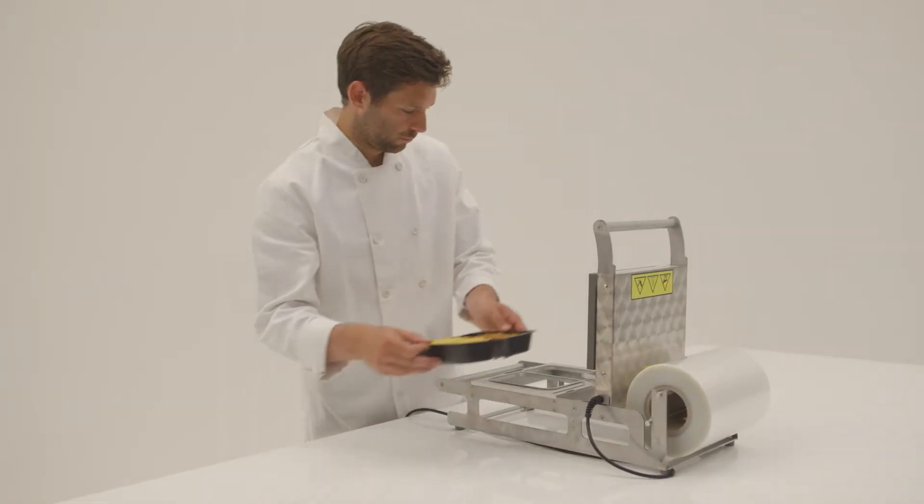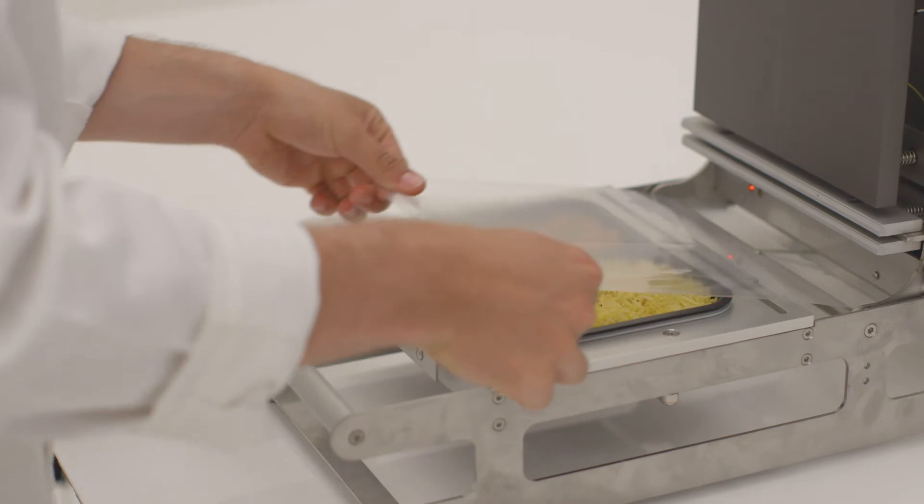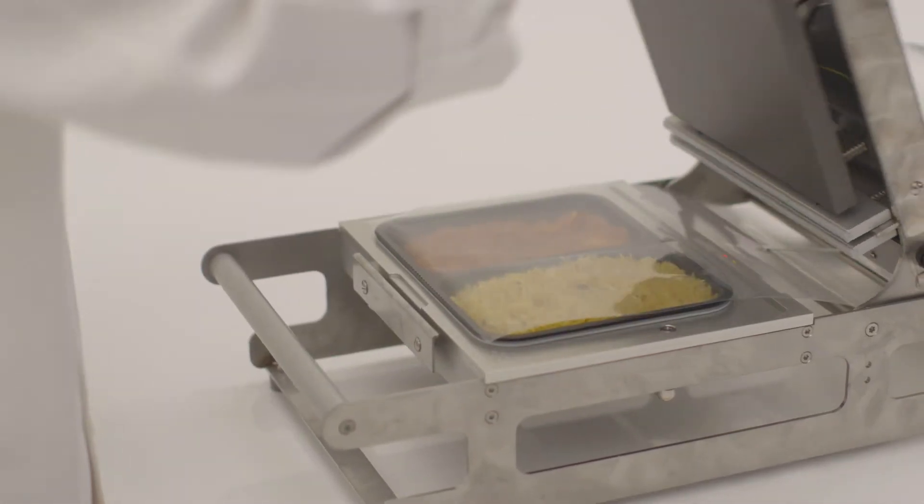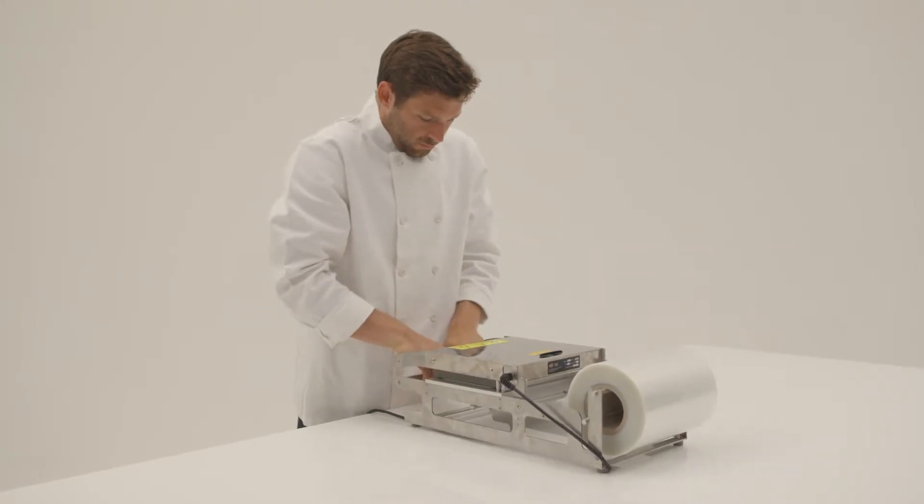Load the tray in the machine and pull the film forward so it covers the tray edge. Pull the two handles together and press down firmly for two to three seconds.